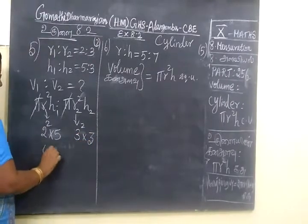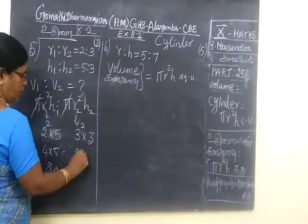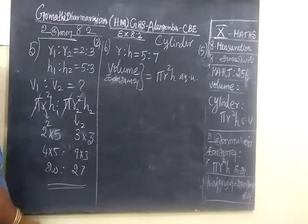Then 4 into 5, so 20 is to 27. So this is 2 more questions.